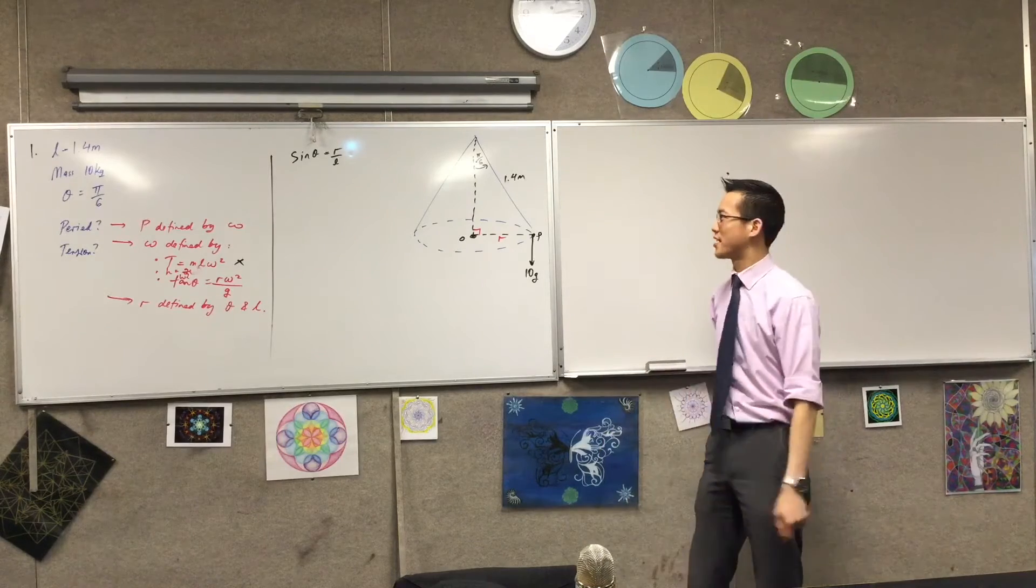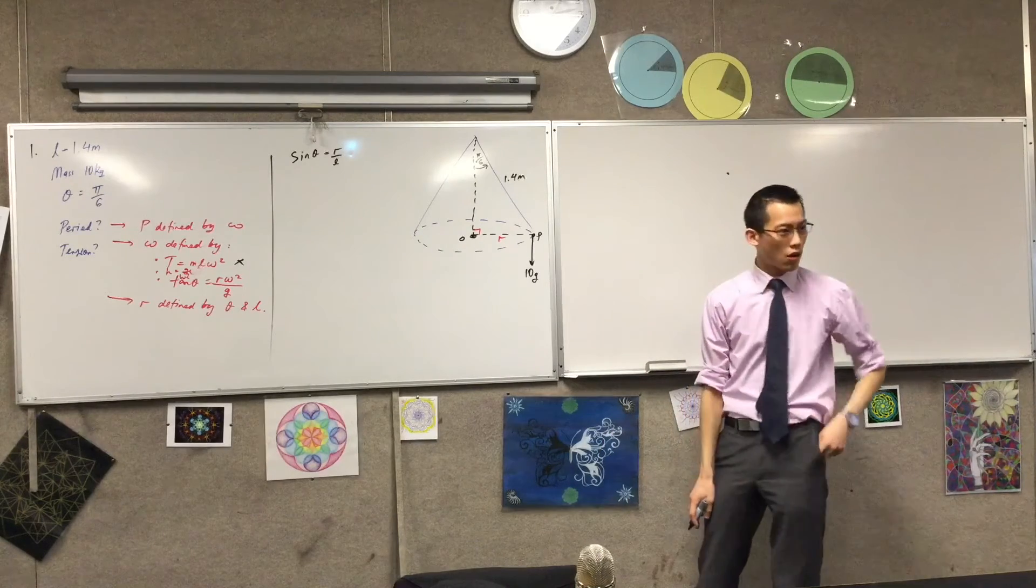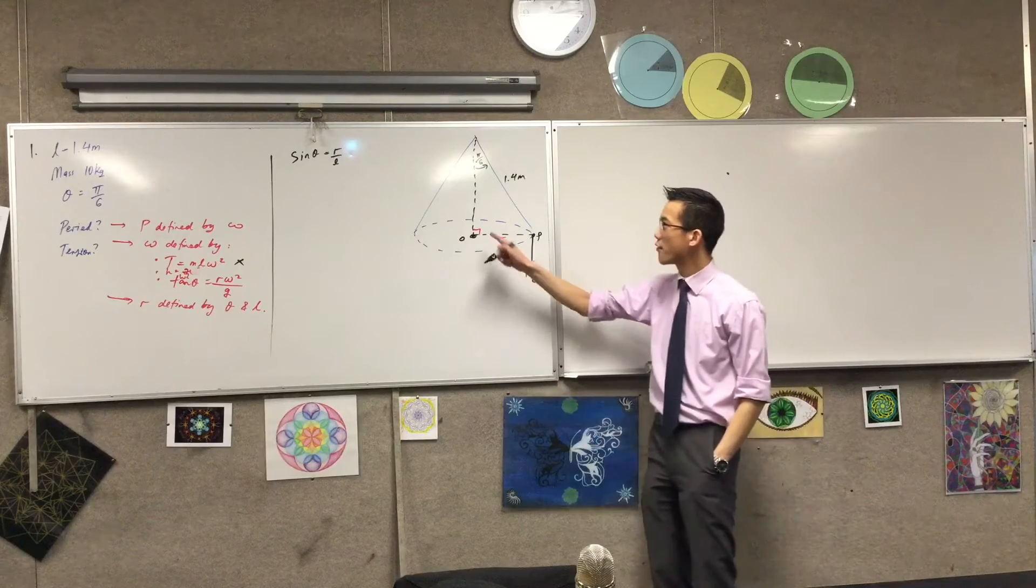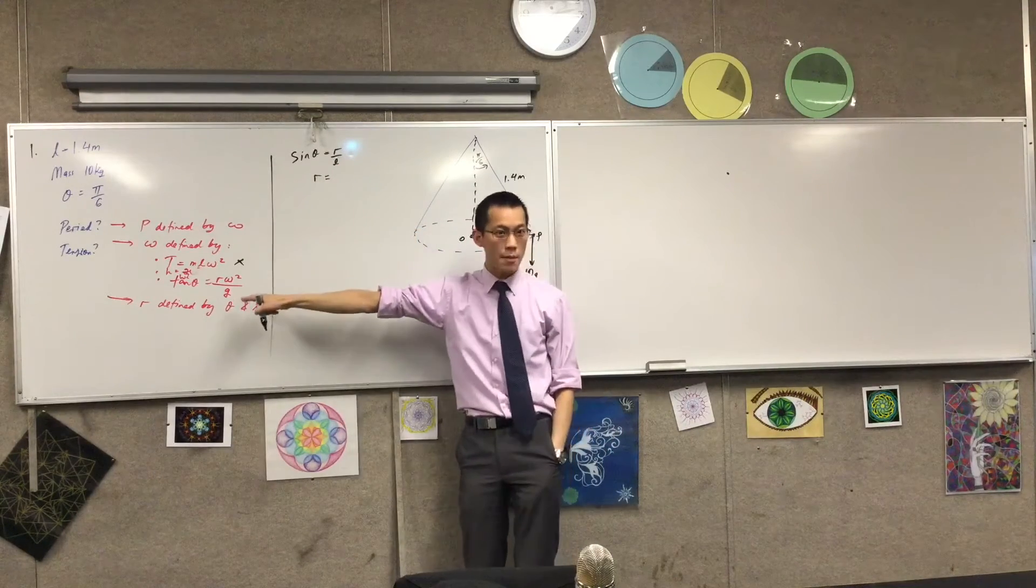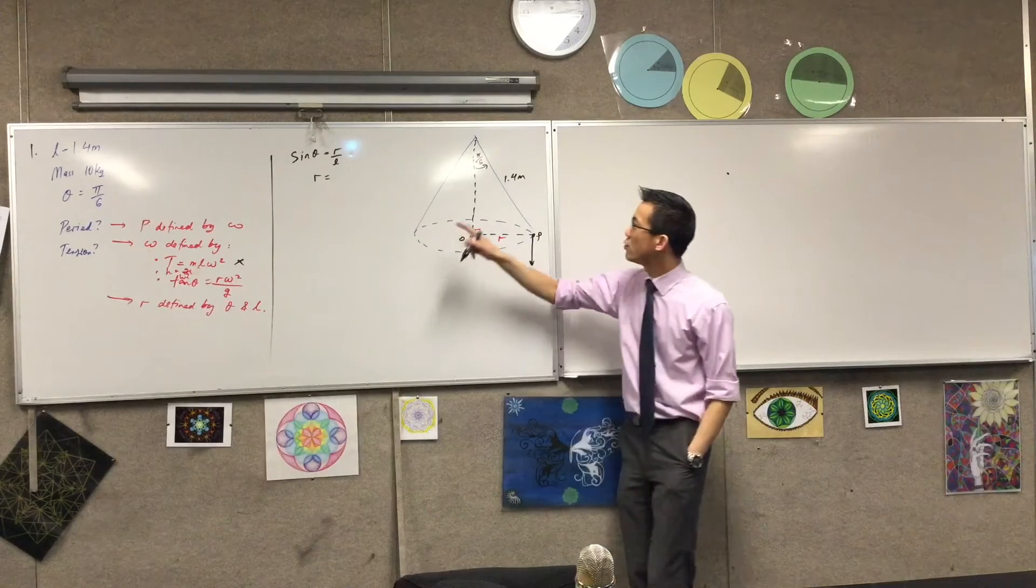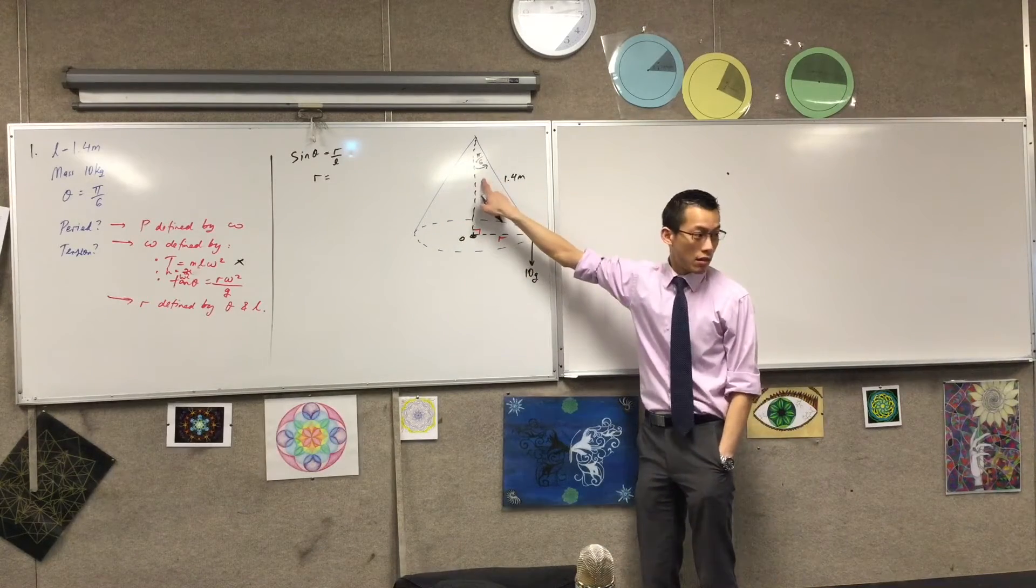Alright, we haven't passed through this question now, so let's do it. Sine theta equals R on L. So therefore I can just say that R, that's the thing I'm after, remember? I'm actually after R. R is going to be L sine theta, right?